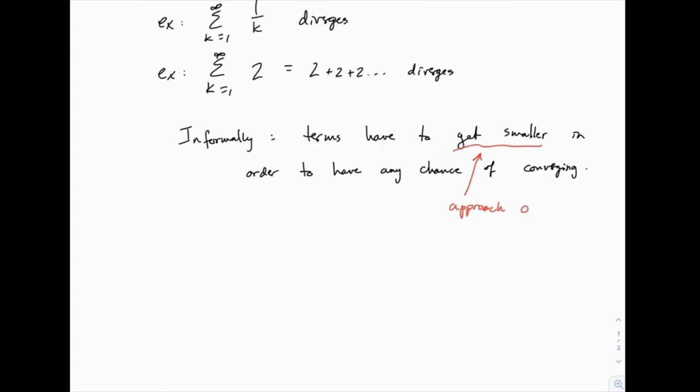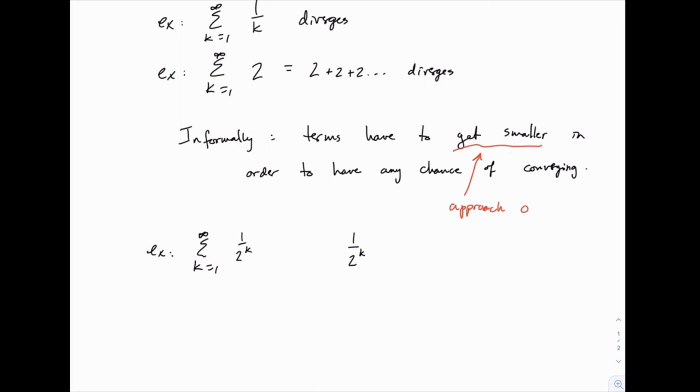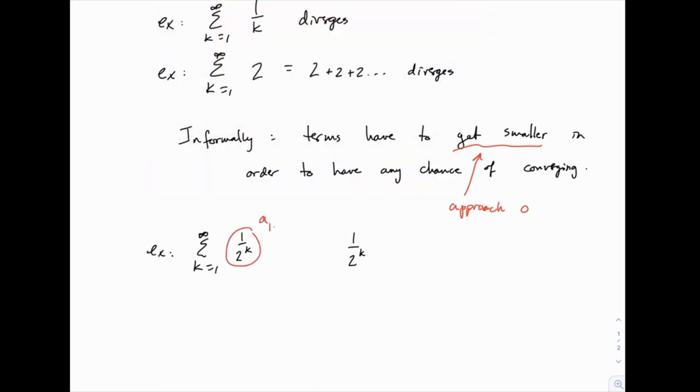So to test that the terms approach zero, let me write it this way. So for example, taking the series 1 over 2 to the k, the terms of the series are given by this form 1 over 2^k. So we might use a sub k to represent a general term in this series. So when k equals 1, we'd have 1 half. When k equals 2, we'd have 1 fourth and so on. So 1 over 2 to the k is the general form of the terms of the series.